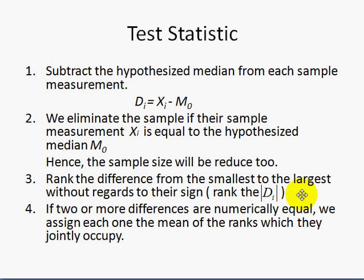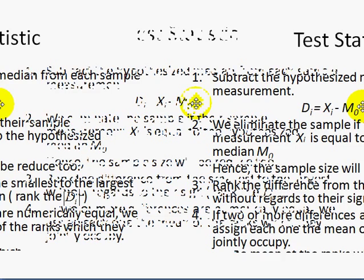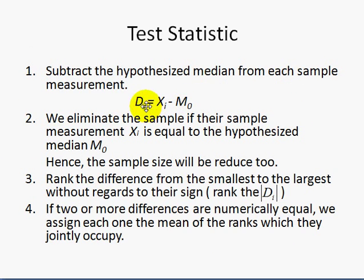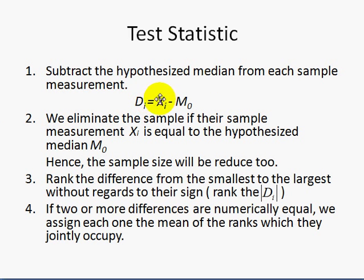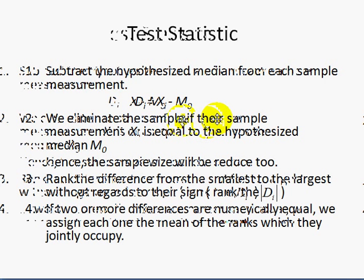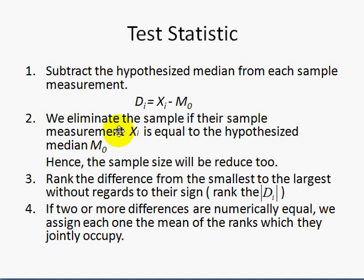To obtain the test statistic, we use the following procedure. First, we subtract the hypothesized median from each sample measurement. We use this formula to compute that: D-i is the difference of X-i, which is the sample measurement, minus M-naught, which is the hypothesized median. We eliminate the sample if the sample measurement X-i is equal to the hypothesized median. Hence, the sample size will be reduced too.